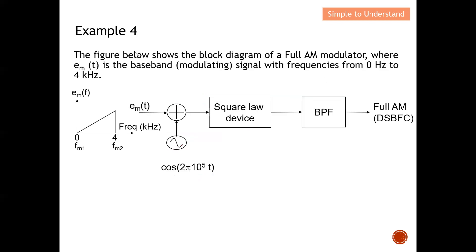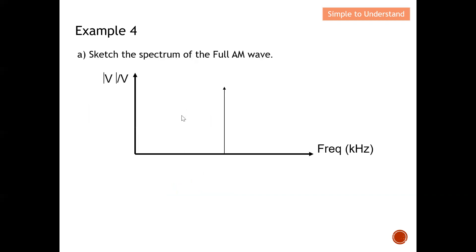Example 4: The figure below shows the block diagram of a full AM modulator where m(t) is the baseband signal with frequency from 0 Hz to 4 kHz. The carrier has an amplitude of 1 volt and carrier frequency of 100 kHz. These two signals feed into the AM modulator, go through a square law device, and then through a band pass filter to produce a full AM double sideband full carrier signal.